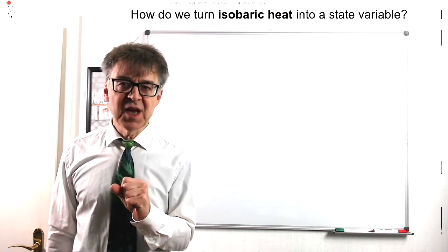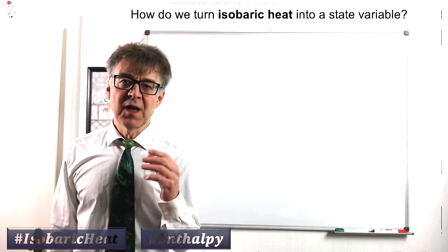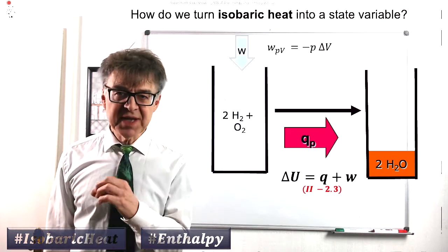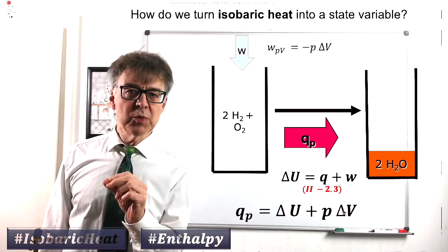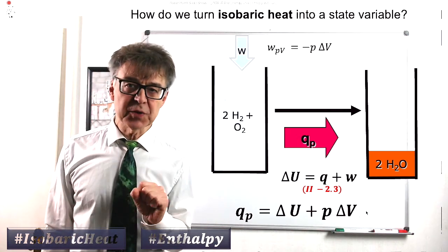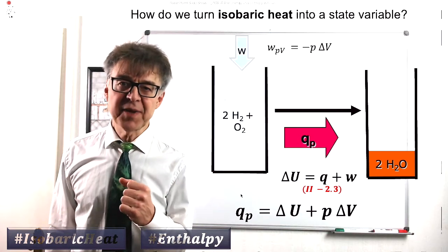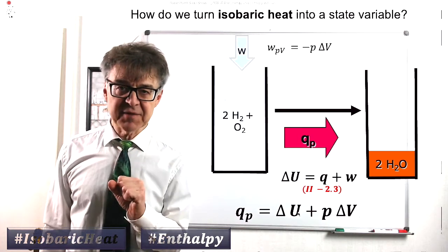In these processes, we have to take into account pressure volume work, negative p times delta v. This means that the isobaric heat q sub p plus pressure volume work is equal to delta u. We can solve the equation for q sub p and then get delta u plus p times delta v.